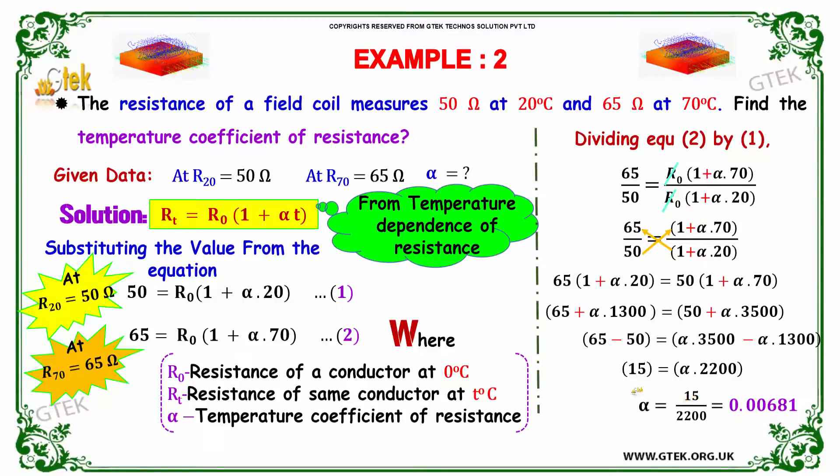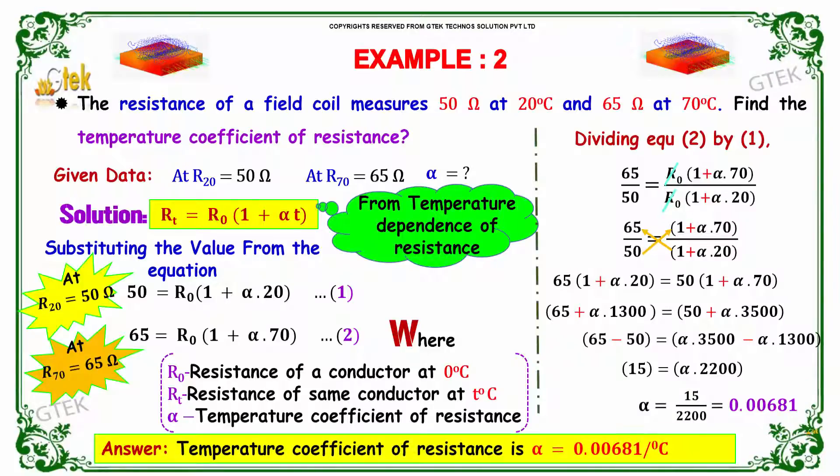So that's the temperature coefficient of the resistance. The temperature coefficient of the resistance is alpha is equal to 0.00681 per degree Celsius.